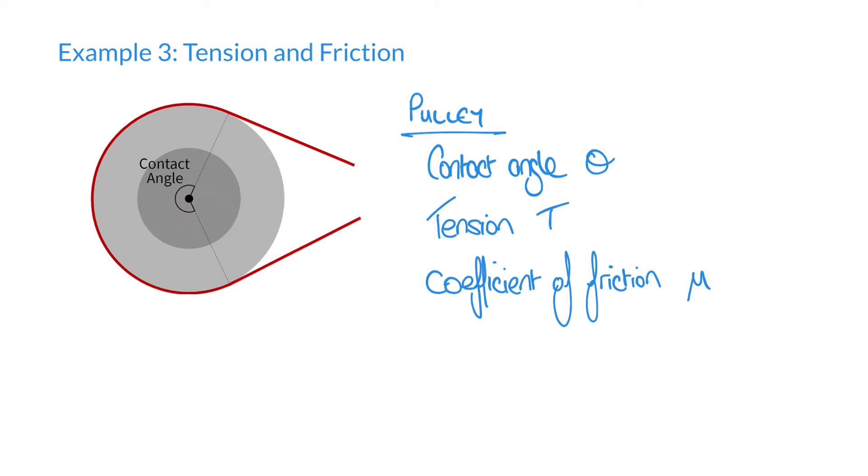Let's say that we have a situation like the one pictured here where we have a pulley subjected to a tension T, and that pulley has a contact angle which we're going to give the symbol theta with this pulley, and we also have some element of friction. We're going to use the symbol mu to represent the coefficient of friction in this particular scenario.